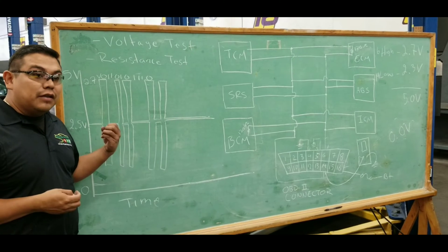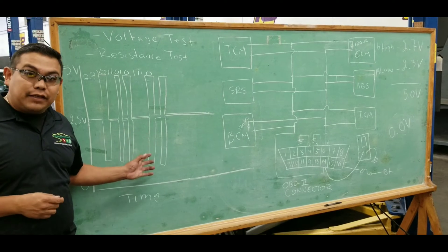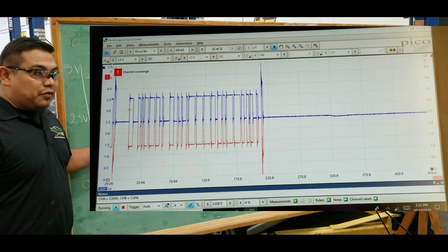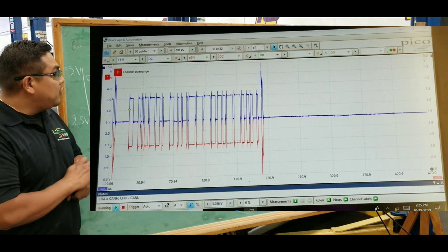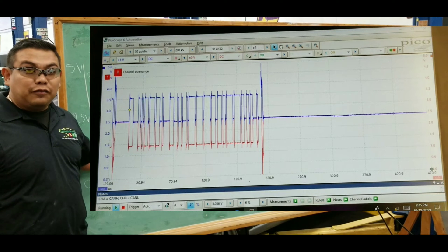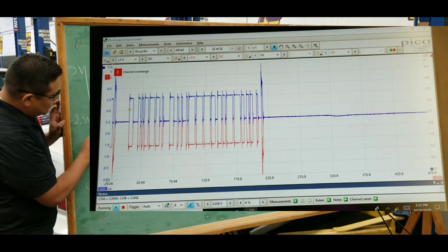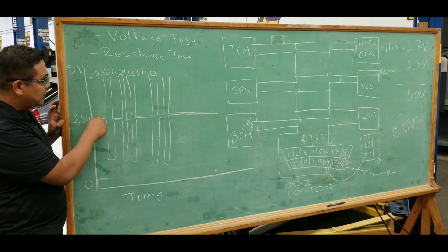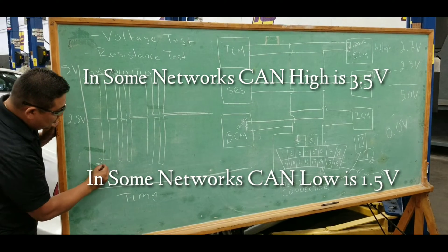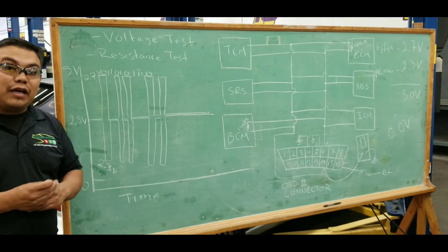This binary code is where the information gets sent and received within the computers. From a technician's standpoint, what information is being sent and received doesn't really matter. As a tech, you want to know: do you have activity on the network if you have a no-communication issue? The high side switches from 2.5 to 2.7 volts; the low side from 2.5 to 2.3 volts. Both the high and the low should add up to 5 volts.